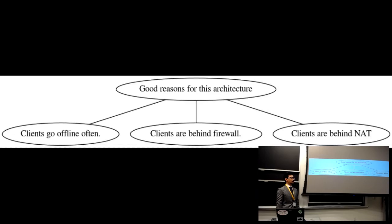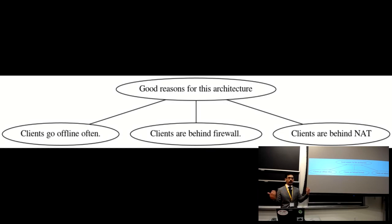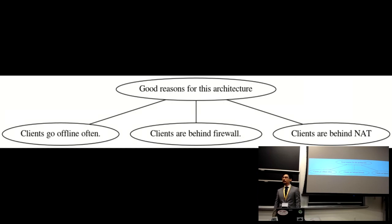An audience member asks if the speaker has heard of OnionShare, which allows setting up a quick server on your own computer and giving someone an address to drop a file. The speaker says it sounds great. The audience member notes it can go both ways — publish or receive — and it's all Torified. The speaker says the two are complementary: his tool is for internal networks, and OnionShare would be for getting around firewalls or external networks.